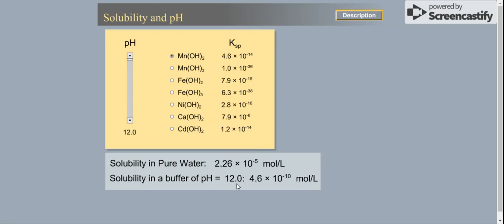If I have it in a high pH, then you can see it's even less soluble. It drops from 10 to the minus 5 to 10 to the minus 10 moles per liter, so hardly anything dissolves. That's because at a high pH we have lots of OH minus in solution which will drive the equilibrium towards the solid manganese hydroxide and decrease the amount of manganese ions in solution.